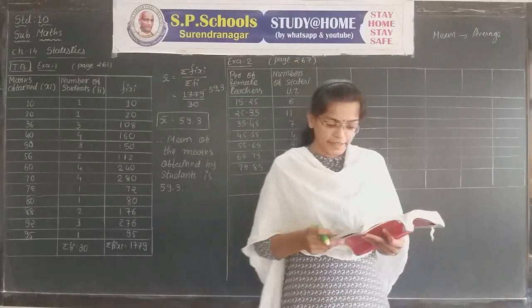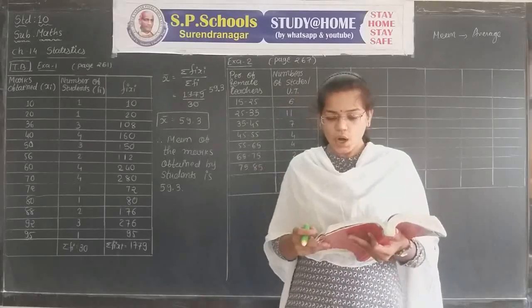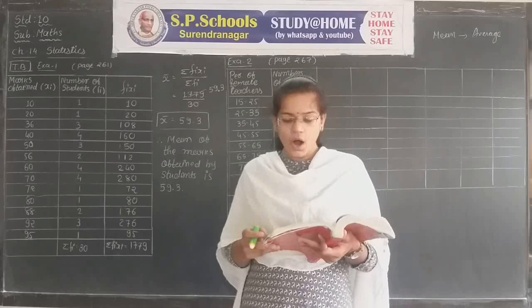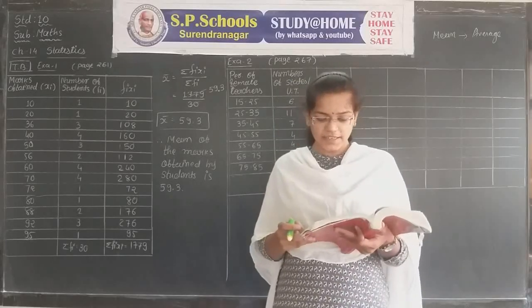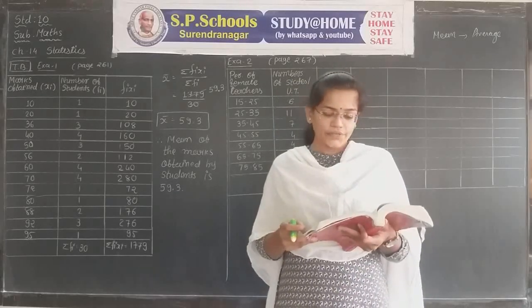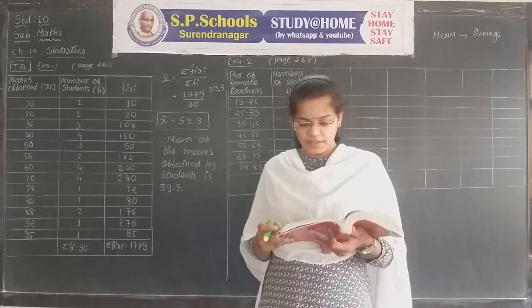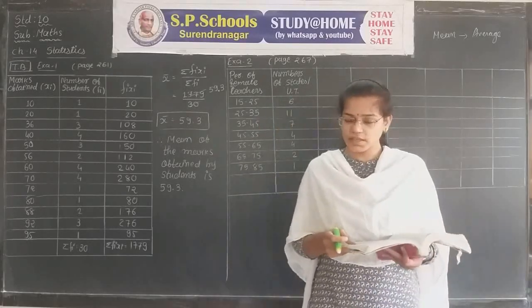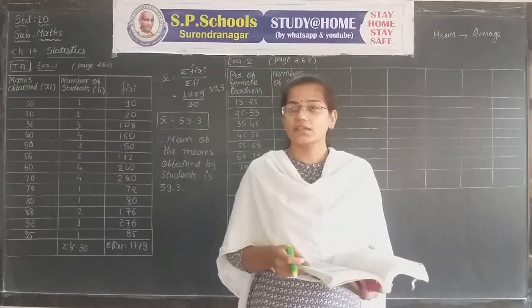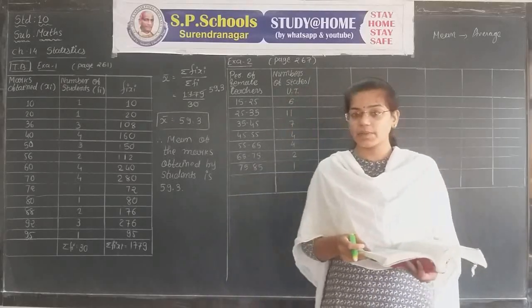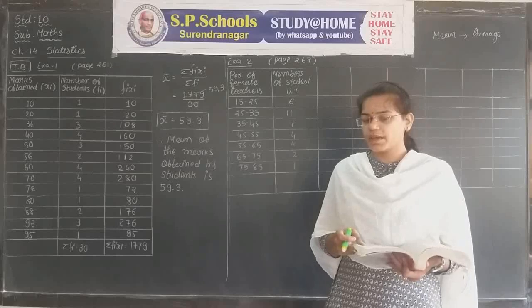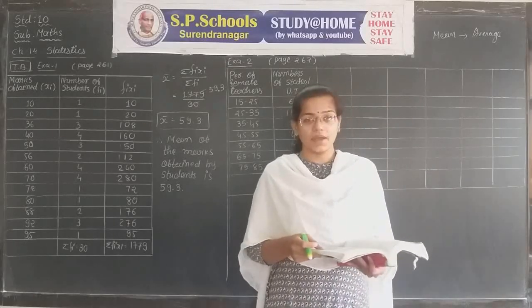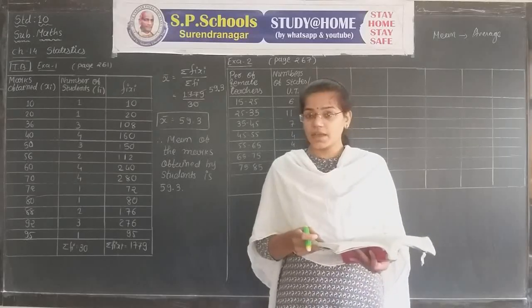The table gives the percentage distribution of female teachers in the primary schools of rural areas of various states and union territories of India. Find the mean percentage of female teachers by all three methods discussed in this section. The three methods are: first, the direct method; second, the assumed mean method; and third, the step deviation method.